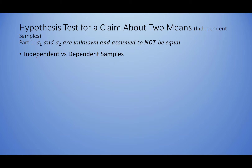Before we get started, we first need to look at what it means to have an independent sample versus a dependent sample. Independent samples means that our two groups that we are looking at — our two populations — are not related to each other in any way, shape, or form.